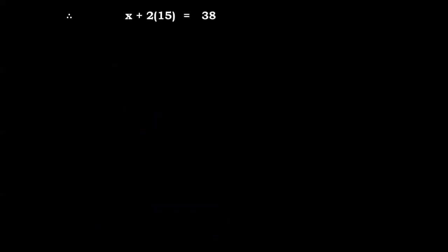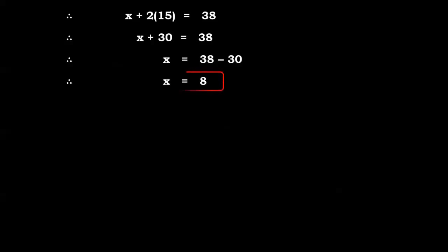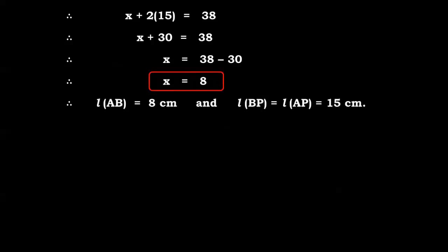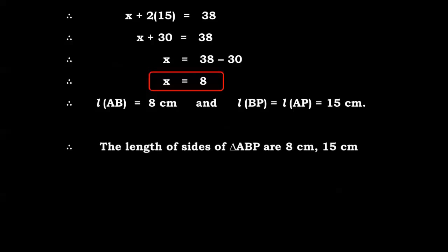Substituting y = 15 in equation 2: x + 2×15 = 38, so x + 30 = 38, therefore x = 8. The answer: length AB = 8 centimeters, and length AP = length BP = 15 centimeters. So the lengths of sides of triangle ABP are 8 cm, 15 cm, and 15 cm.